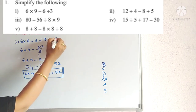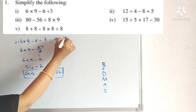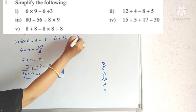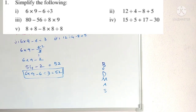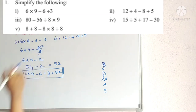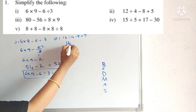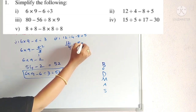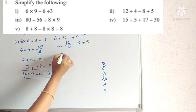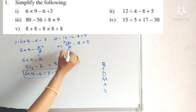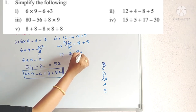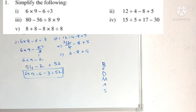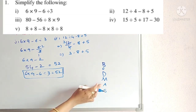Second problem: 12 ÷ 4 − 8 + 5. We have division, subtraction, and addition. By BODMAS, first do division: 12 ÷ 4 = 3. So we get 3 − 8 + 5. Now we have addition and subtraction.